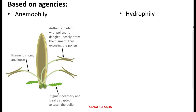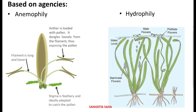Next is hydrophily, where the pollinating agent is water — 'hydro' means water. Pollination takes place below the surface of the water. The flowers are very small and inconspicuous; they do not have any fragrance and their petals are not brightly colored. The pollen is basically adapted to float in water. This is seen in Vallisneria.